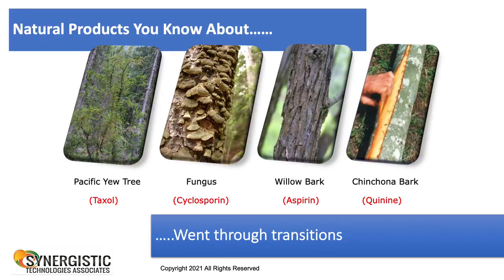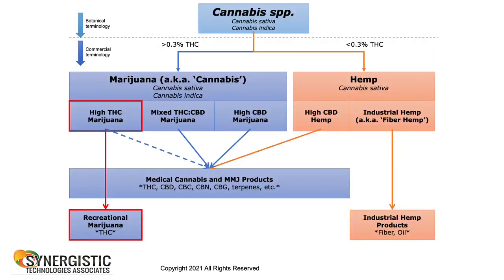There are natural products you already know: Pacific yew tree with taxol for cancer, fungus for cyclosporine, willow bark for aspirin, quinine. Each one of these has gone through the transition from a natural product to a synthetic product. But there are also other products we use every single day that haven't taken those same transitions. When you look at cannabis itself and start to categorize it, we've separated it into marijuana—cannabis—and separated it into hemp, which is also cannabis, and somewhere along the way diluted the scientific definition, moving through a process of identifying the plant based on two major compounds for regulatory purposes.